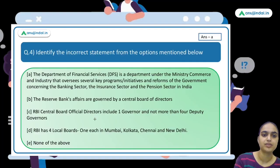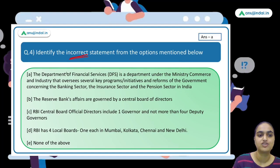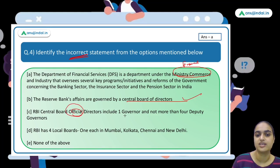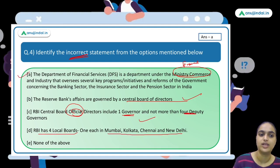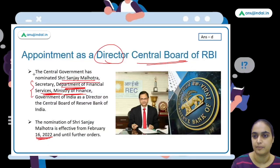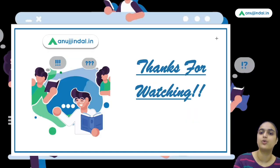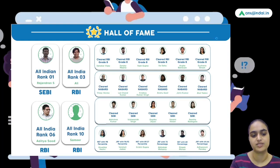Identifying the incorrect statement: the Department of Financial Services is under the Ministry of Commerce — this is incorrect, it is under the Ministry of Finance. All other statements are correct. So the answer is option A. That concludes today's session — hope it was useful for you all.